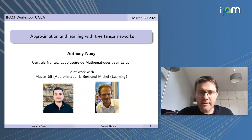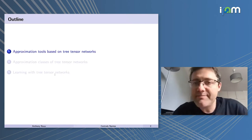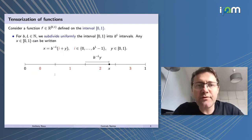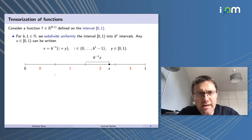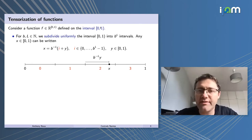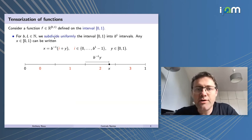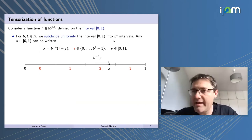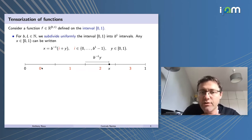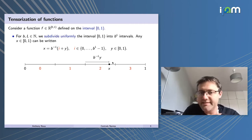First I will introduce the approximation tools based on tree tensor networks that we have analyzed. The starting point is the introduction of so-called tensorization of functions. I introduce this technique first for a function of a single variable defined on an interval zero, one. The first step is to subdivide uniformly your interval into B to the power L intervals. Any point X on your interval can be identified with an integer I, which locates which interval X is in, and a local variable Y, which gives where the point X is within that interval.